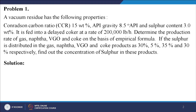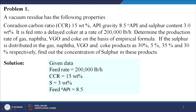The first problem: a vacuum residue has the following properties — conduction carbon ratio CCR is 15 weight percent, API gravity 8.5 degree API, and sulfur content 3.0 weight percent. It is fed into a delayed coker at a rate of 2 lakhs pound per hour. Determine the production rate of gas, naphtha, VGO, and coke on the basis of empirical formula. If the sulfur is distributed in the gas, naphtha, VGO, and coke products as 30%, 5%, 35%, and 30% respectively, find out the concentration of sulfur in these products.